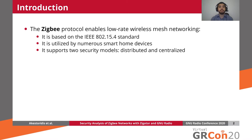First of all, Zigbee is a wireless communication protocol that is built on top of the IEEE 802.15.4 standard to enable low-rate wireless mesh networking. Zigbee is utilized by numerous smart home devices such as smart locks and smart outlets, mainly because Zigbee focuses on achieving low power consumption and low manufacturing cost.